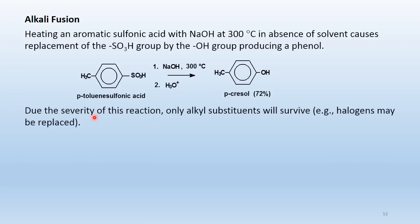Due to the severity of this reaction, only alkyl substituents like methyl or ethyl survive. Any halogens would be replaced in the same way the sulfonic acid group was replaced.